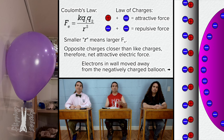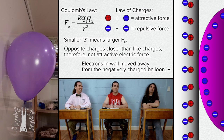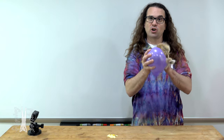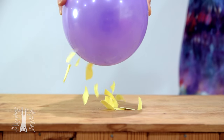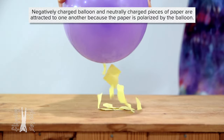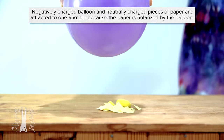Because the opposite charges are closer than the like charges, the attractive electric force is larger than the repulsive electric force, and the net electric force between the balloon and the wall is an attractive force. Again, what happens to the wall is called polarization of charge. And polarization of charge is why a negatively charged balloon will also pick up little pieces of paper, because the paper becomes polarized just like the wall. The negatively charged balloon picks up little pieces of paper because the balloon polarizes the paper.